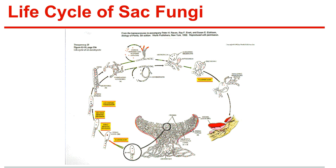Yeasts are unicellular fungi. The dry granules contain ascospores, which become active in a moist environment. The process of asexual reproduction in yeasts is called budding.